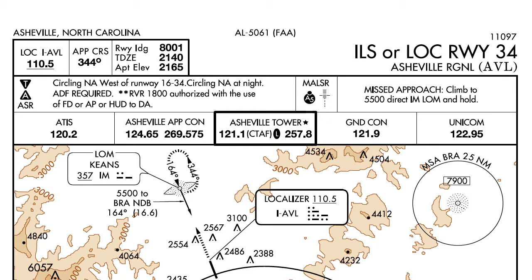Hi everyone. In this lesson we're going to take a look at what information is contained within the margin data of an FAA approach plate. The margin data is often overlooked because most of us just use it to find the approach that we're going to be flying. In reality the data actually gives us quite a bit of information that'll help you find the proper procedure to fly for an airport.